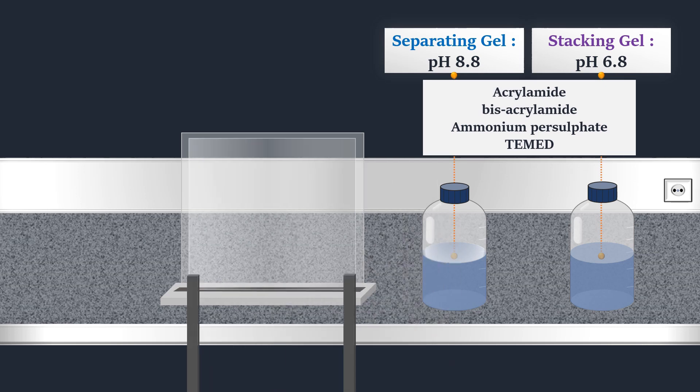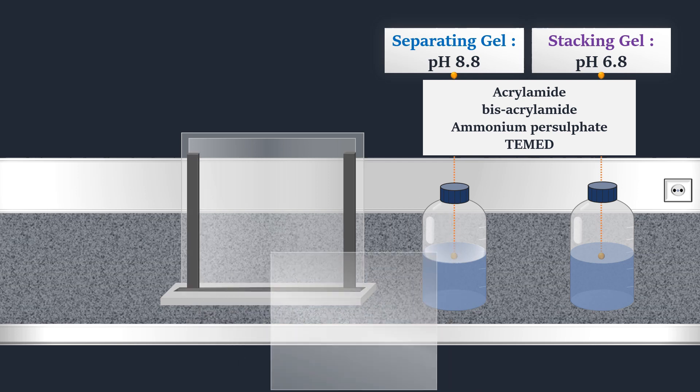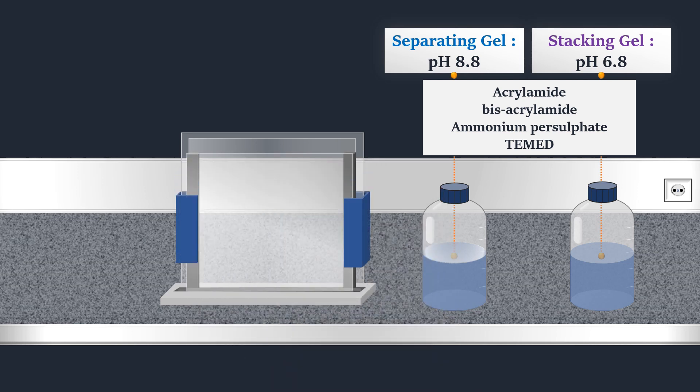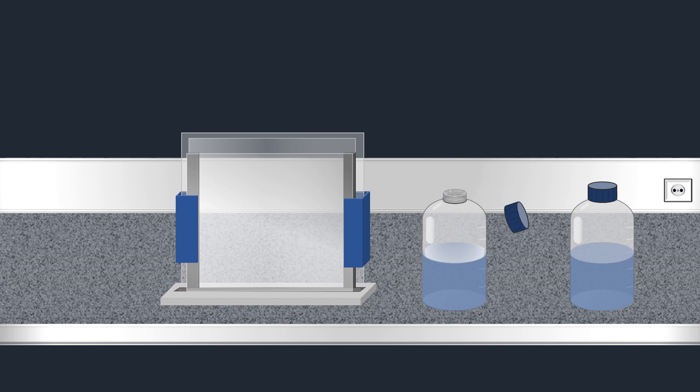The gel is produced by polymerization between two glass plates anchored vertically in a cassette. The separating gel is poured first.